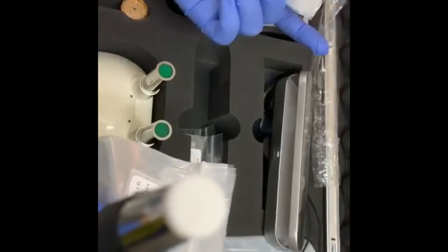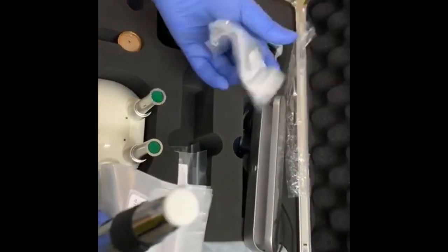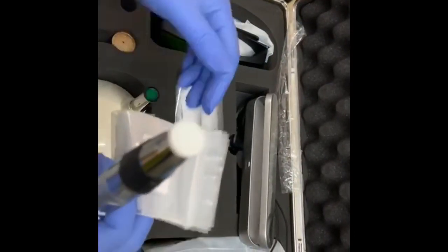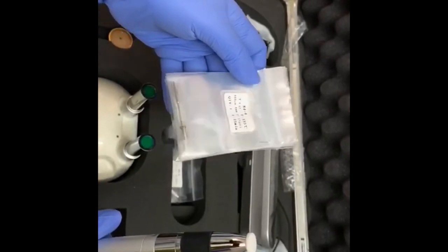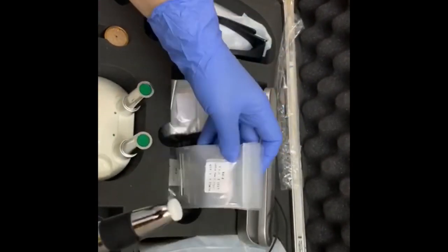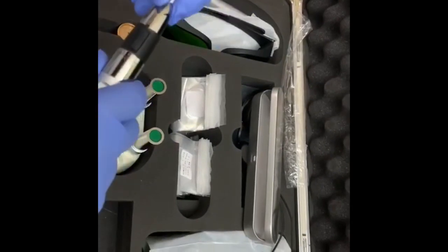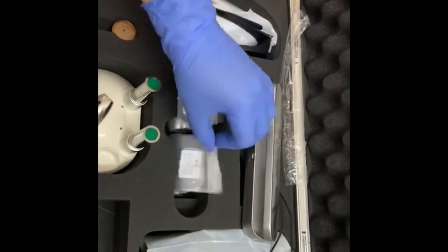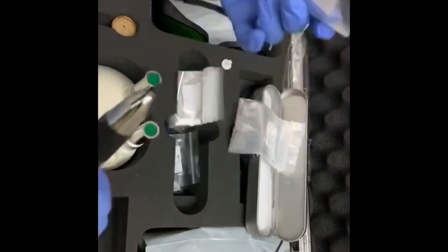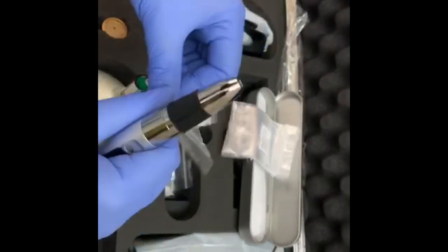The long tips are for perio and for endo and the short ones are basically for excision and crown lengthening. Let me just show you one tip and then I will show you on the patient also. I am doing one crown lengthening patient right now.